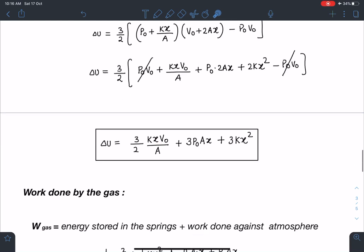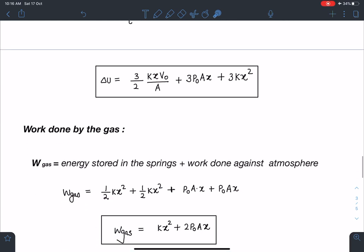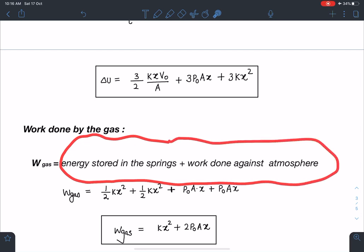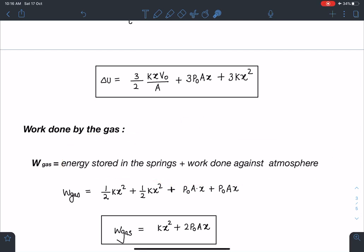Another one is work done by the gas. So this is also important and students make mistake. If you see, this work done by gas, that is equal to energy stored in the springs plus work done against the atmosphere. Or you can do integral P_gas dV also, that will be slightly tricky. This is much easier to think.